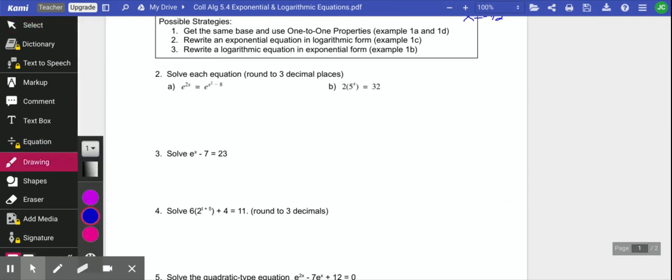So let's take a look at a few more of these. We want to solve these equations. We have e to the 2x equals e to the x squared minus 8. This is a 1 to 1 property. They both have base e. There's nothing else in the problem, so you can just ignore the e. We have 2x equals x squared minus 8.